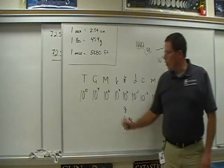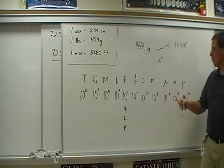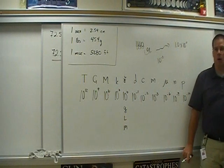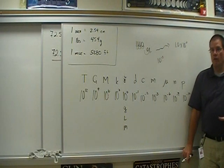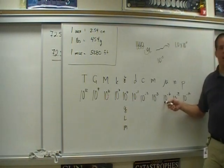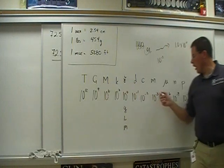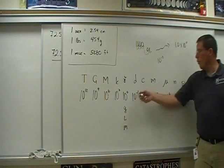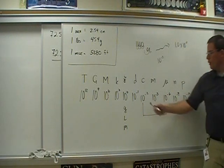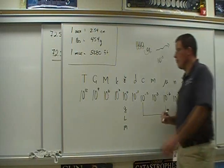Let me ask you this: if we were going from gigagrams to micrograms, how many times would I move the decimal? From giga to micro? 15. Very good. I'd go nine here and then another six. What we don't want to do is subtract these values and go, oh, it's nine minus six. The only time we subtract is if we go from, like, centi to micro — how many times would I move the decimal now? Four. Good.